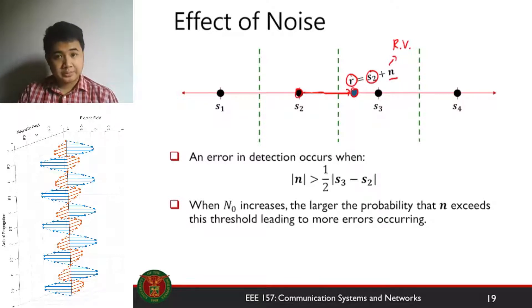So when will an error occur? An error will occur if this noise is large enough such that S2 crosses the boundary. So basically, an error occurs in this case if the magnitude of the noise is greater than half the distance between S3 and S2.